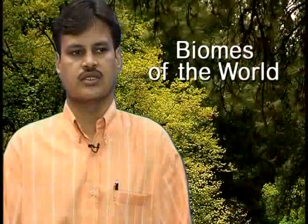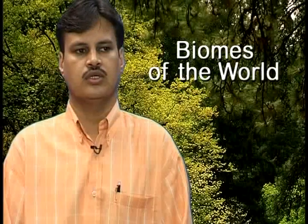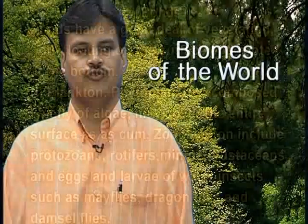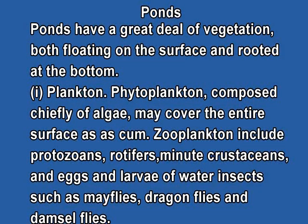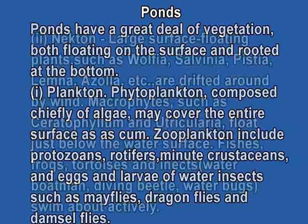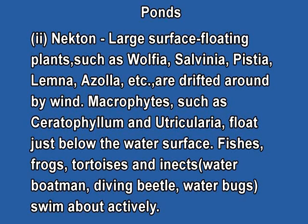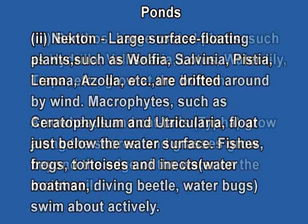The vegetation in ponds includes planktons. Phytoplanktons are chiefly composed of algae and may cover the entire surface as scum. Zooplanktons include protozoans, rotifers, minute crustaceans, eggs, and larvae. There may be some water insects like mayflies, dragonflies, or damselflies. Large surface floating plants like Wolffia, Salvinia, Pistia, and Azolla are drifted around by the wind. There are certain macrophytes like Stratophyllum and Utricularia that float just below the water surface.